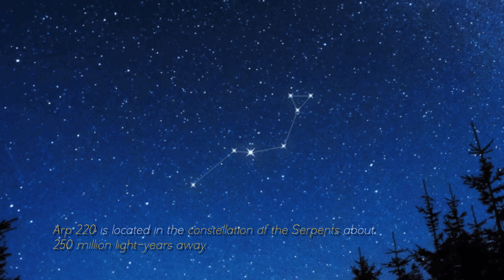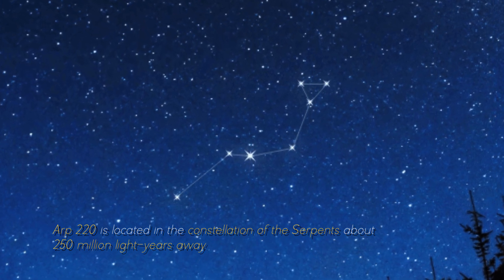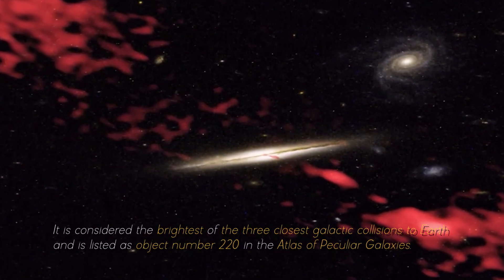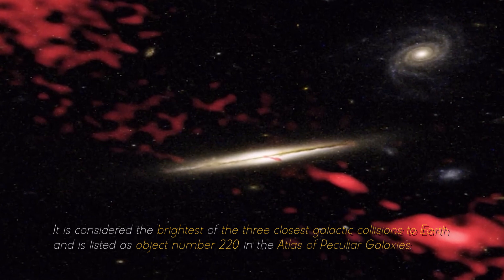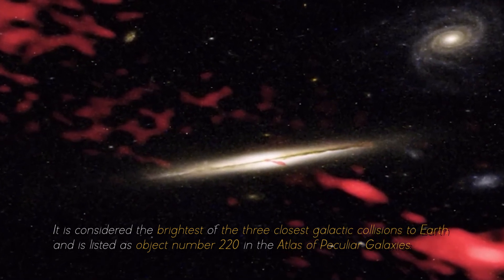ARP 220 is located in the constellation of the Serpents, about 250 million light years away. It is considered the brightest of the three closest galactic collisions to Earth, and is listed as object number 220 in the Atlas of Peculiar Galaxies.